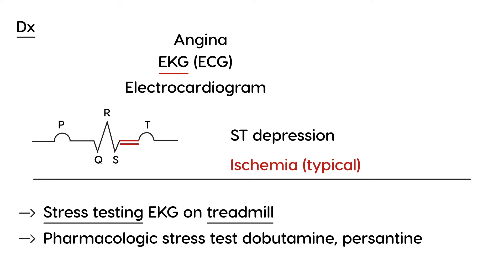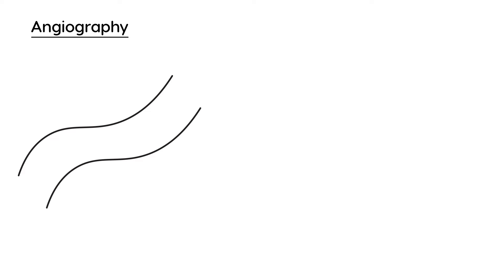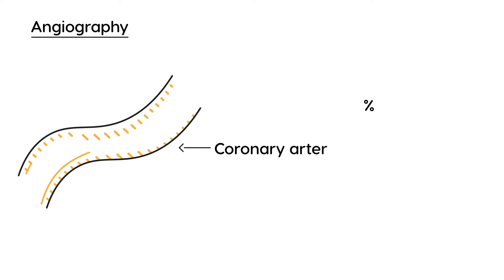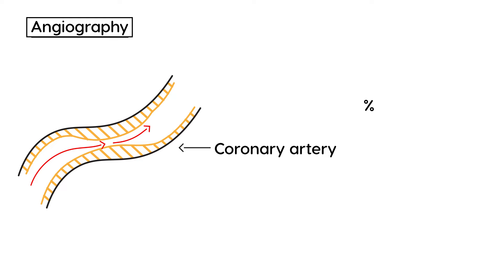Once you're convinced the patient has blockage of the coronary arteries leading to ischemia and inadequate oxygen supply to the heart muscle, you would do a test called angiography. Angiography is a test to diagnose the level of coronary artery disease, and it will tell you, as a percentage, how much of the lumen of the coronary artery is blocked. The beauty of this test is that while you're doing it, you can also treat — it is both diagnostic and therapeutic.